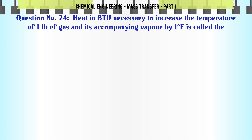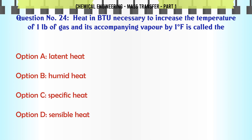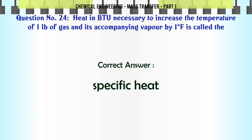Heat in BTU necessary to increase the temperature of one pound of gas and its accompanying vapor by one degree Fahrenheit is called the: A. Latent heat. B. Humid heat. C. Specific heat. D. Sensible heat. The correct answer is Specific heat.